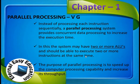To recap: a parallel processing system may have two or more ALUs. The ALU is important for execution. As the system has more ALUs, it is able to execute instructions concurrently — that is parallel processing.